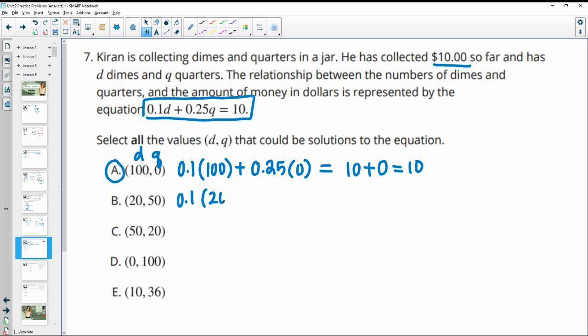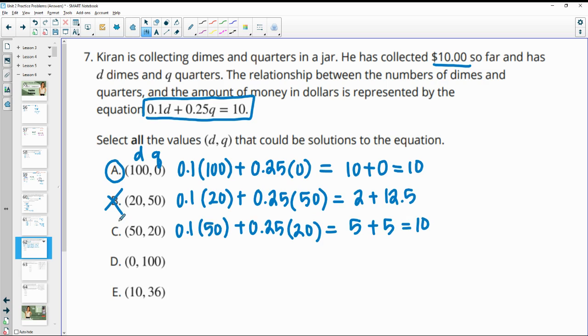Next one, we would have 0.1 times 20 and we would have 0.25 times 50. And that would be $2 in dimes and $12.50 in quarters, which would be over our $10. And then we would continue this process for each of these other ones, okay, multiplying these out. And we would get $5 in dimes here and $5 in quarters, that equals 10. So here we would end up with $0 in dimes and then 100 times 0.25 would give us 25. So that's too many. That'd be $25. Here we'd have 10 times 0.1, which would be $1. And 36 times 0.25 would be $9. And this would give us $10. So that would be a solution as well.